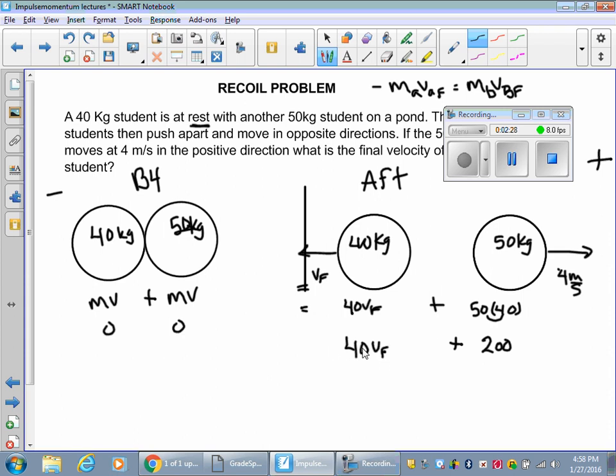Plus 40 times v final. All right, so I got to get rid of stuff so that way I can solve for v, right? And there's 0 over here, so I got to subtract this 200 to move everything over to the other side. Minus 200 from 0, right?